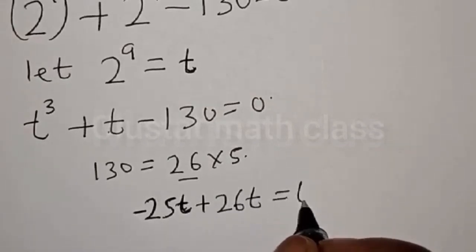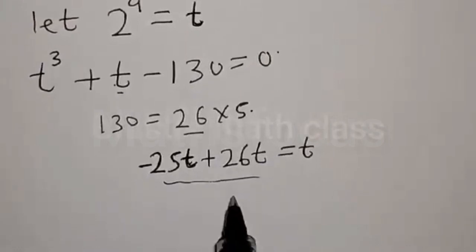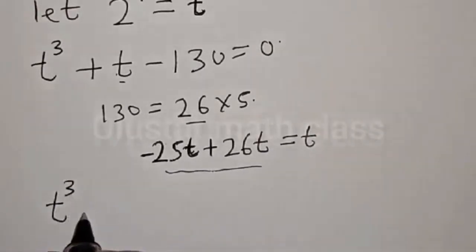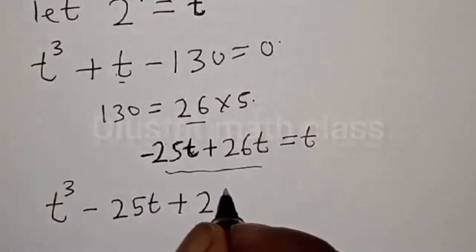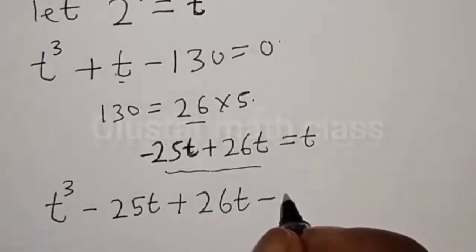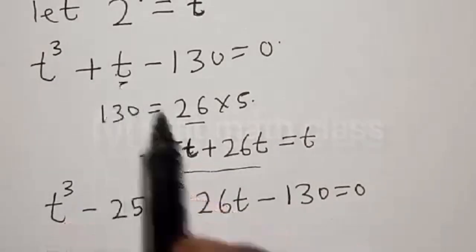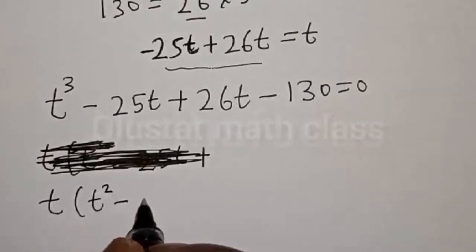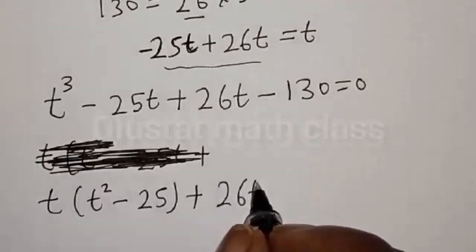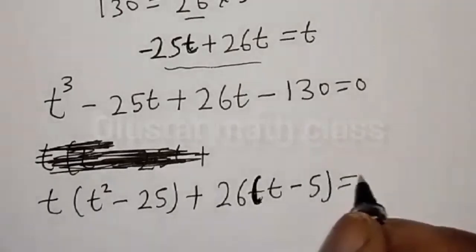We are going to get this t back. Now let's replace t with this value. We have t cubed minus 25t plus 26t minus 130 is equal to 0. This does not formally change the equation because minus 25t plus 26t gives you the same t. Now let's factorize: we have t into t squared minus 25 plus 26 into t minus 5 equal to 0.